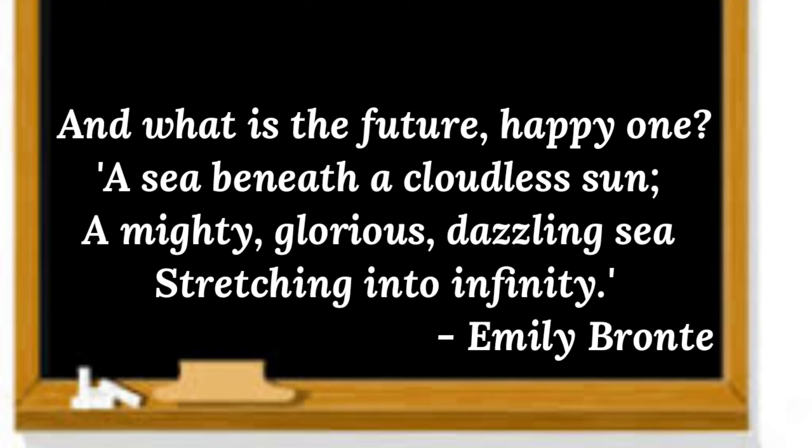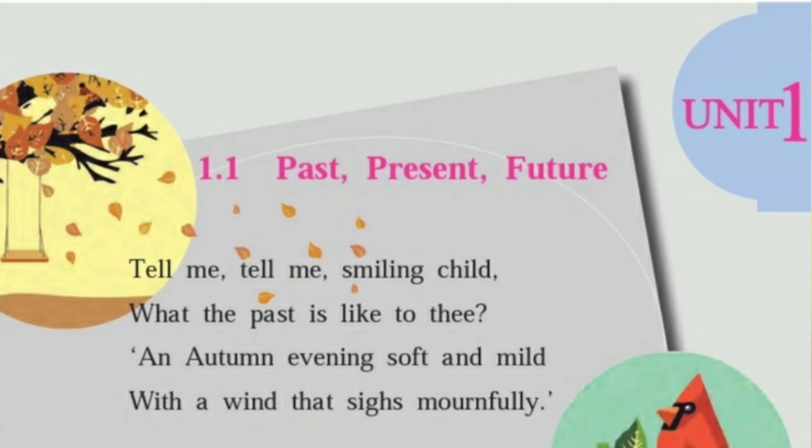Let's look at the first stanza. The poet asks the smiling, happy child: 'Tell me, tell me, smiling child, what the past is like to thee?' Here, 'thee' is an old English expression used for the pronoun 'you,' meaning the poet wants to ask the child what the past was like.